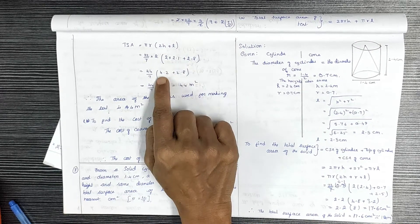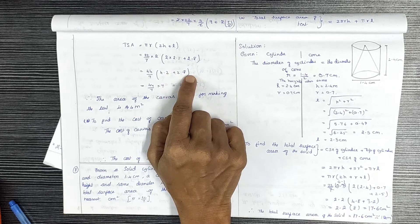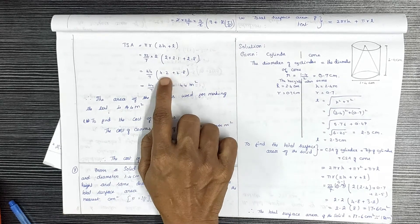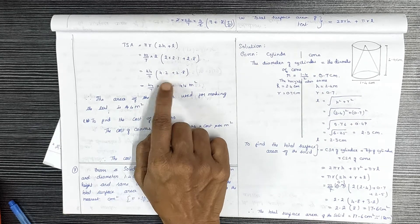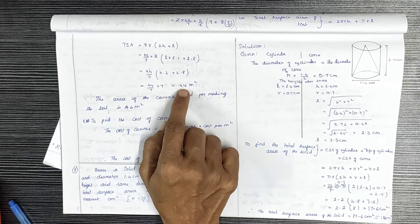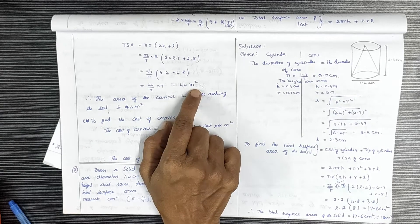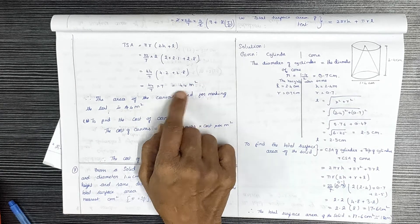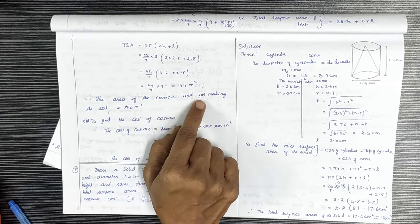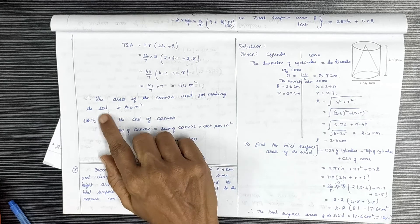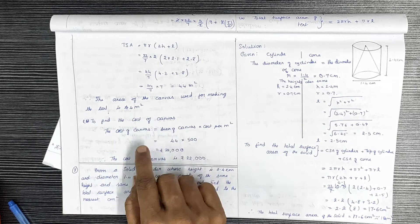Calculating: 2 into 2.1 = 4.2, plus 2.8 = 7. The 7 cancels with the denominator of 22/7, giving 44m². The area of the canvas used for making the tent is 44m².